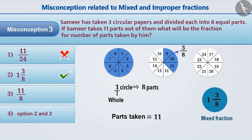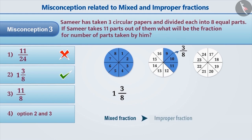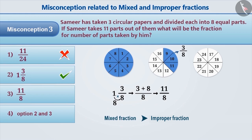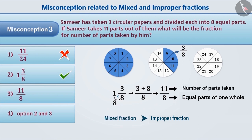Let's convert it into an improper fraction. To convert a mixed fraction into an improper fraction, multiply the whole number with the denominator and add the result to the numerator. Just like we multiply 1 by 8 and add 3 to get 11. By writing 8 in the place of denominator, we get the improper fraction 11/8. From this, you must have understood that to express a fraction, write the number of equal parts into which the whole is divided in the place of denominator, and the number of parts taken in the place of numerator. It means option 3 is also correct.